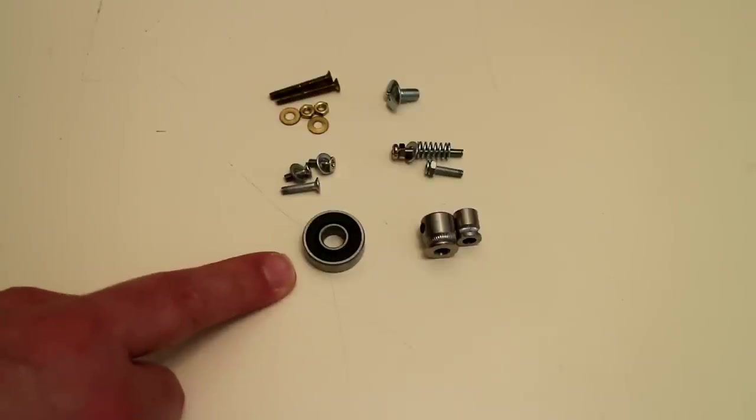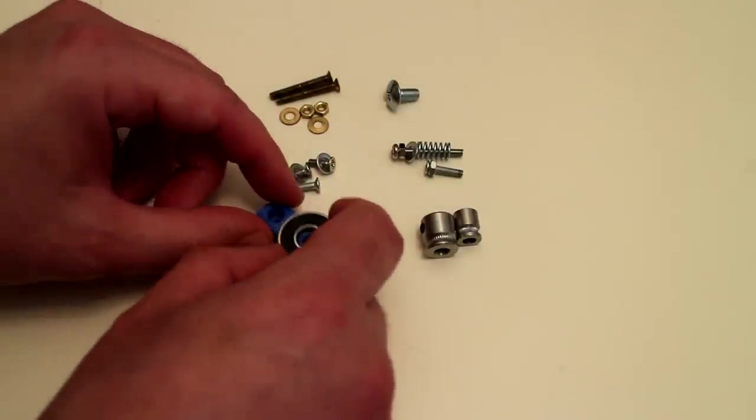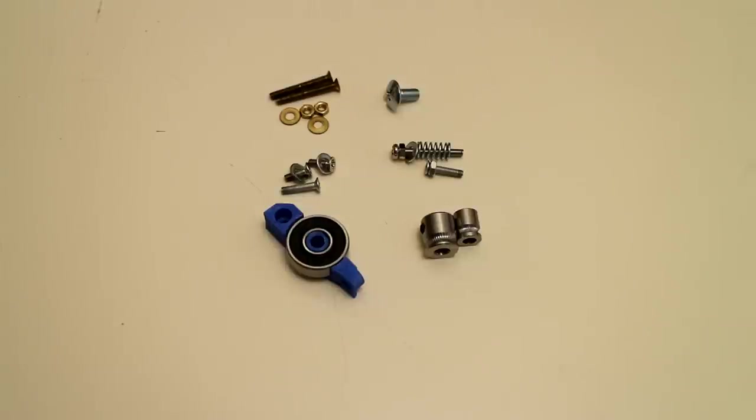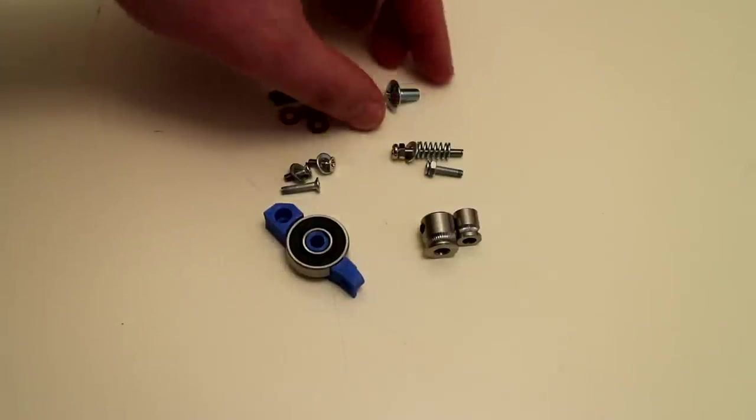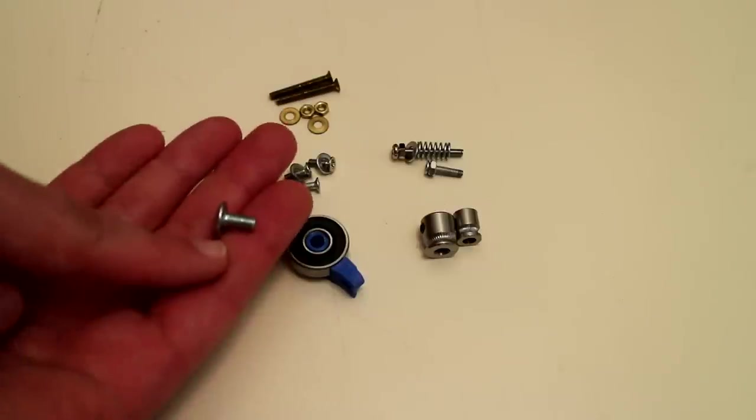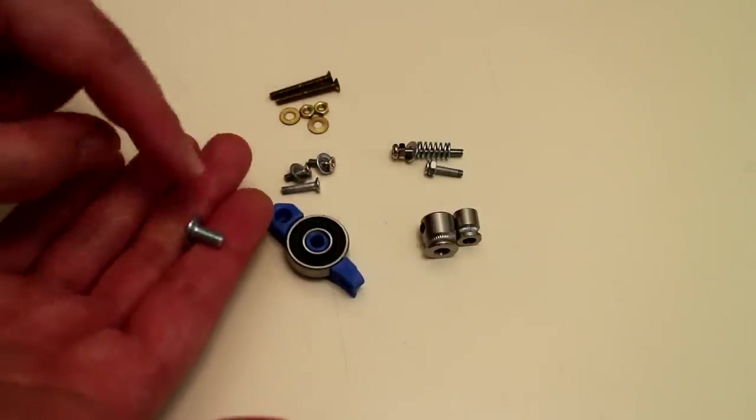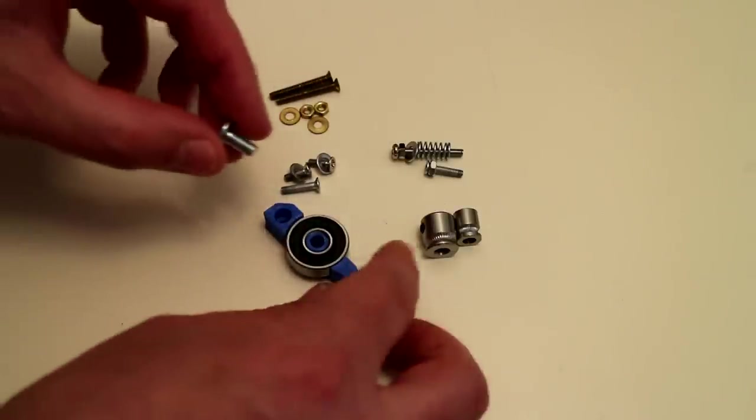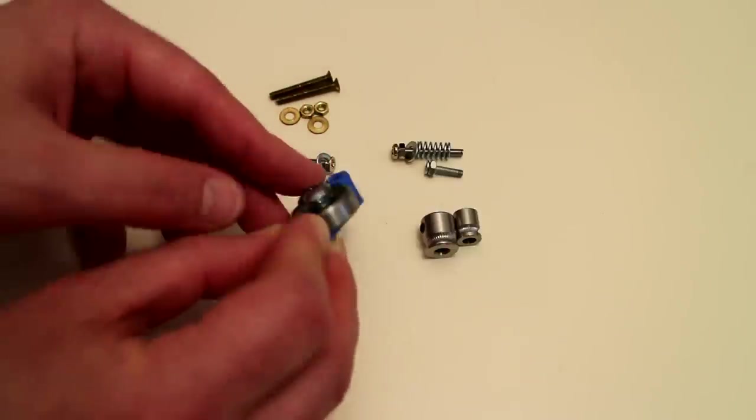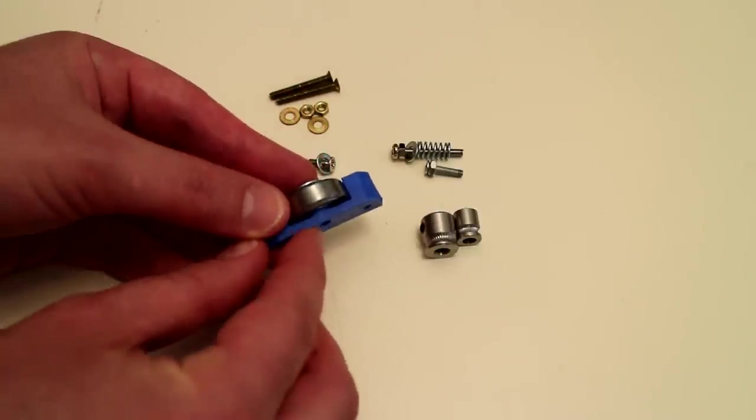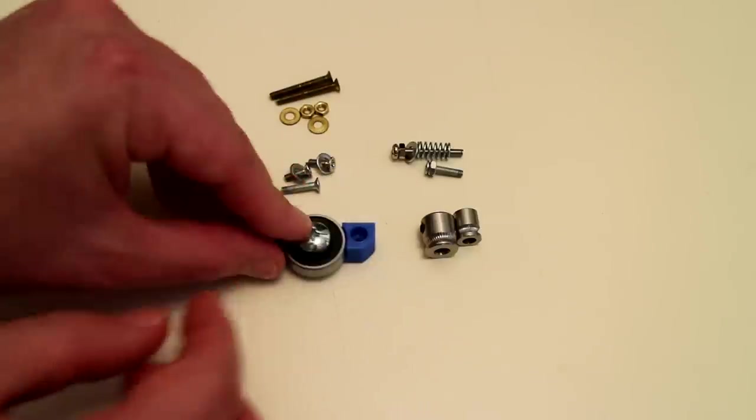You'll need a stock standard 608 bearing. That bearing will be used in the idler section of the Bowden extruder. You'll also need an M5 screw at approximately 10 mm in length. This screw will be used to hold the bearing in place, so the screw simply falls in place there which then allows you to thread into the base of the idler section.